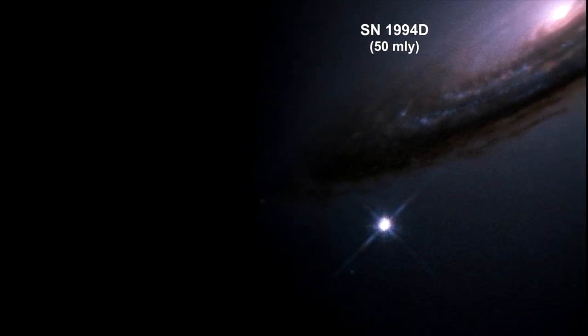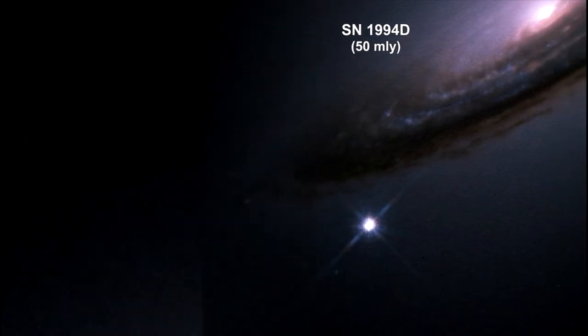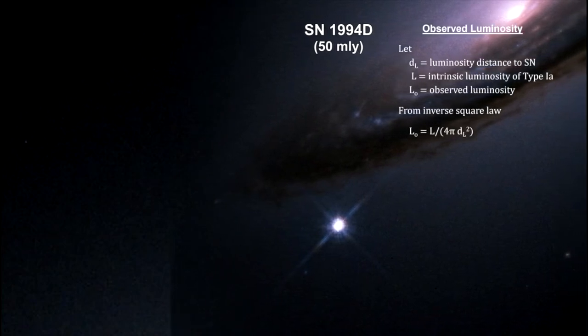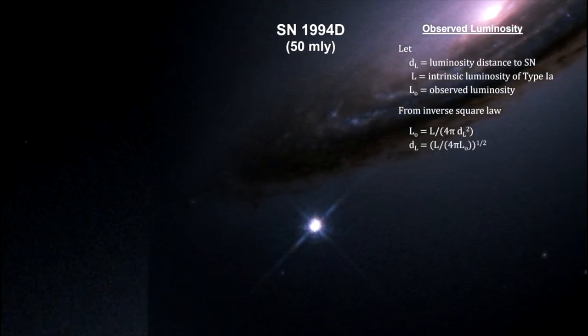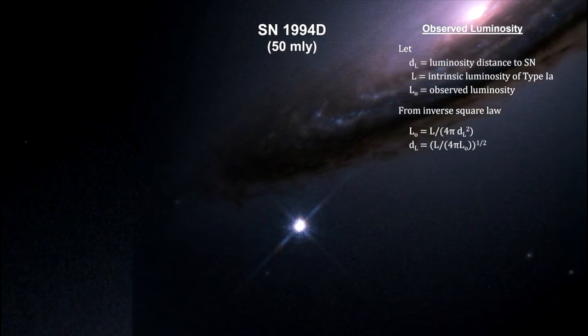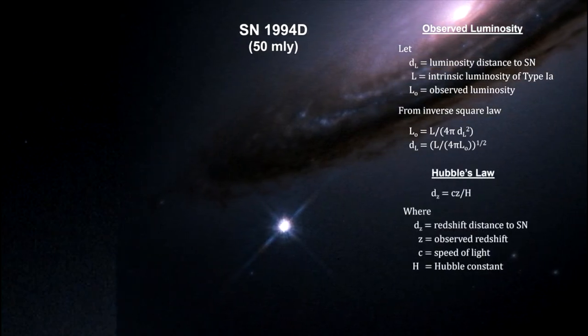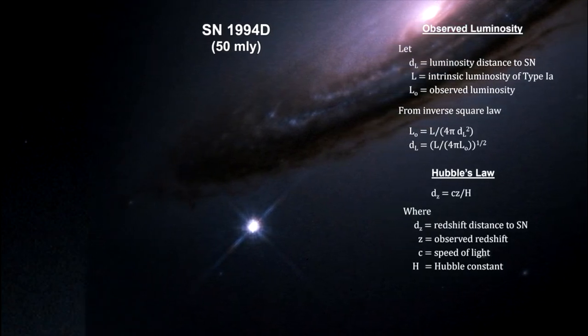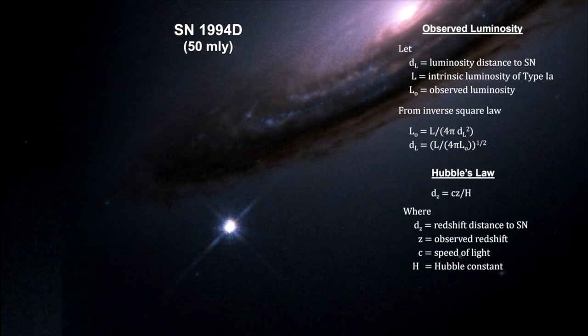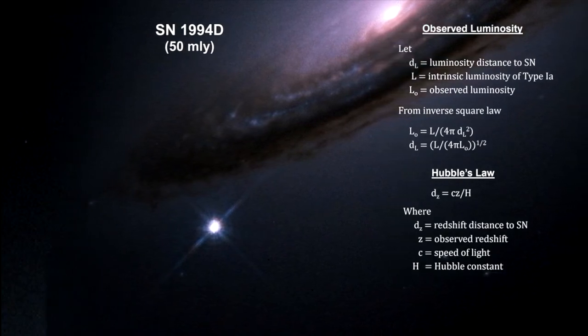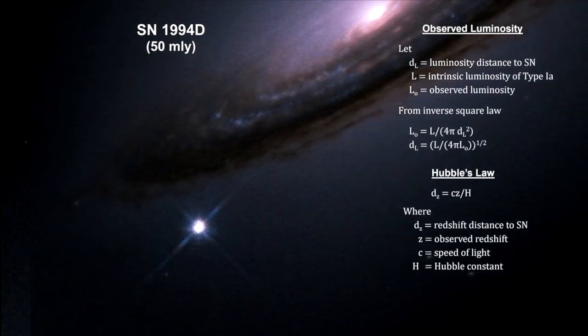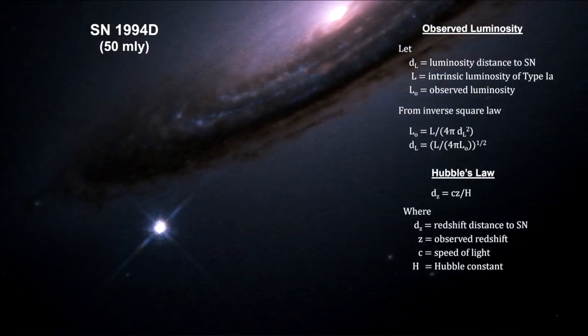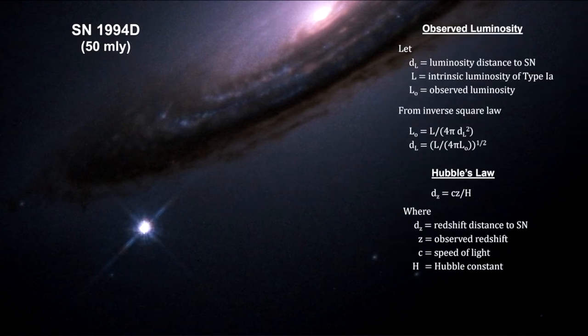Supernovae provide a luminosity reading that enables us to determine their distance via the inverse square law. This distance is called the luminosity distance. Type 1a supernovae also provide a redshift reading that gives us the distance via Hubble's law. Luminosity and redshift combined can tell us if the universe's expansion rate is constant, decelerating, or accelerating.